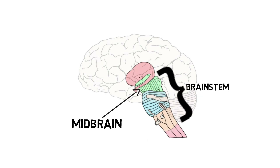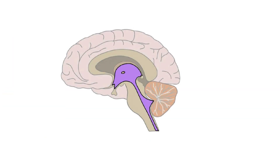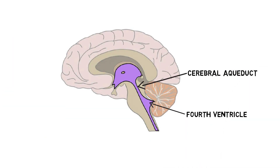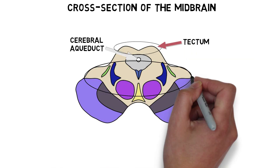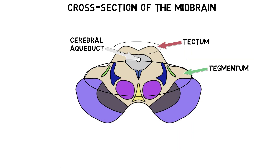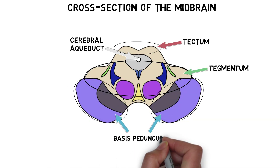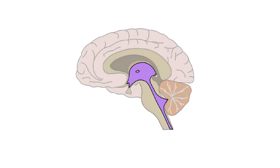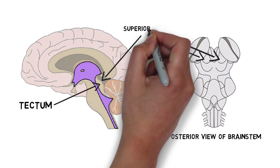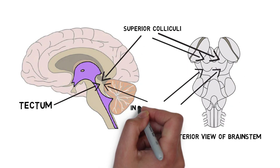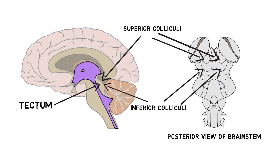The midbrain is one of the three divisions of the brainstem. At the level of the midbrain, the fourth ventricle has narrowed to form the cerebral aqueduct, which connects the third and fourth ventricles. The region of the midbrain behind the cerebral aqueduct is called the tectum, and the area in front is called the tegmentum. The anterolateral portion is made up of two structures called the basis pedunculi. The tectum primarily consists of the superior and inferior colliculi, clusters of neurons forming four bumps on the posterior surface of the brainstem. The superior colliculi are involved in directing behavioral responses toward stimuli, while the inferior colliculi are known for their role in auditory processing.